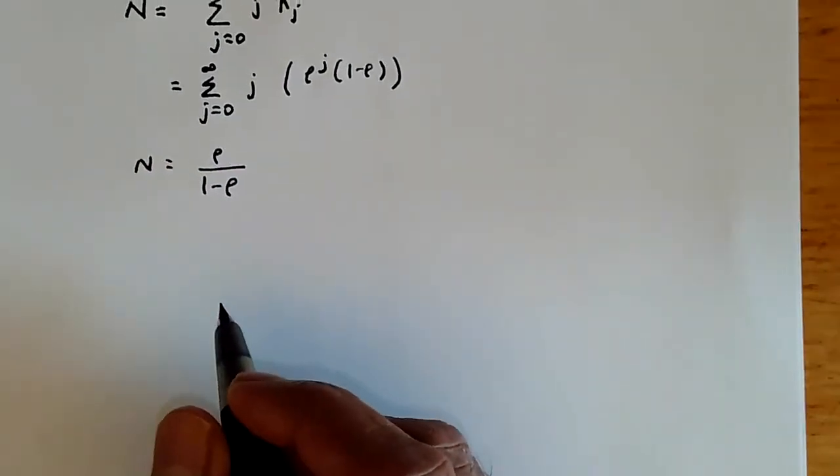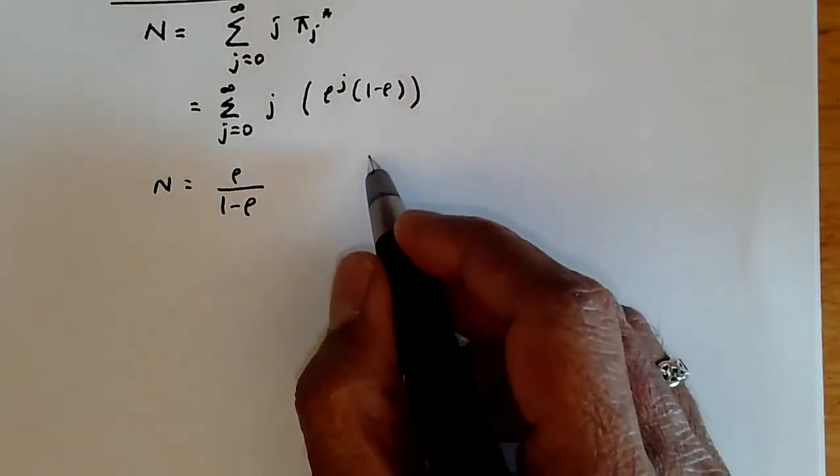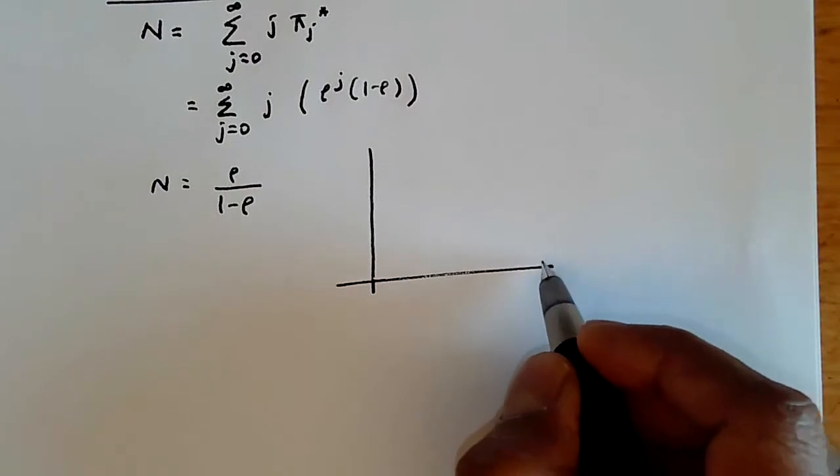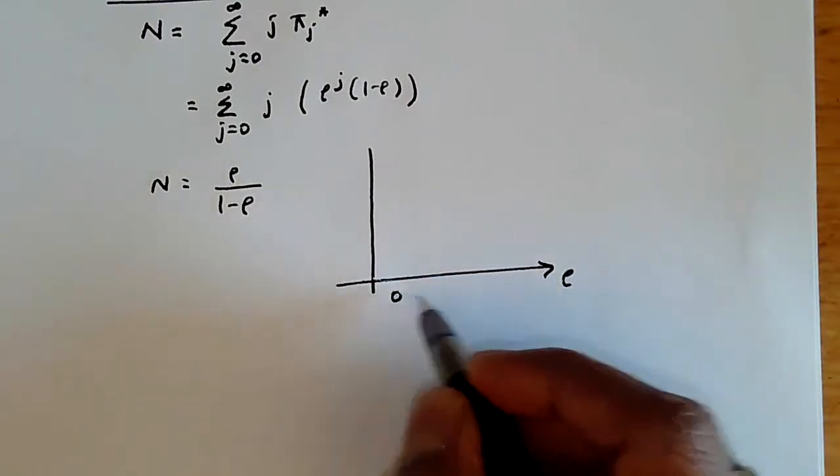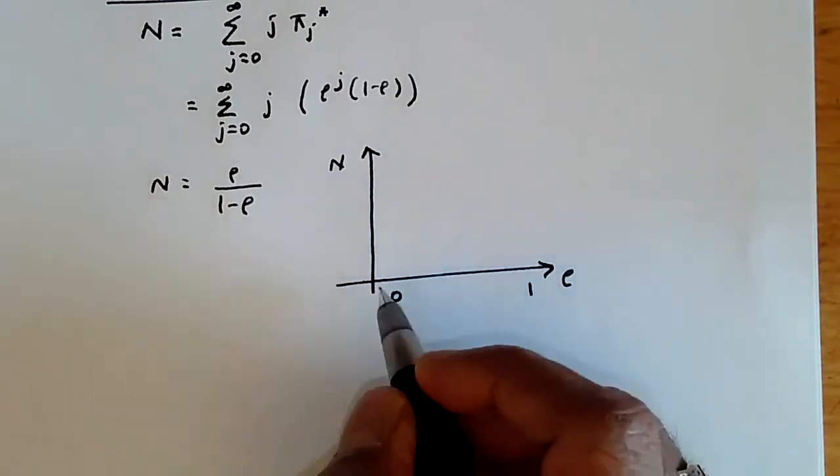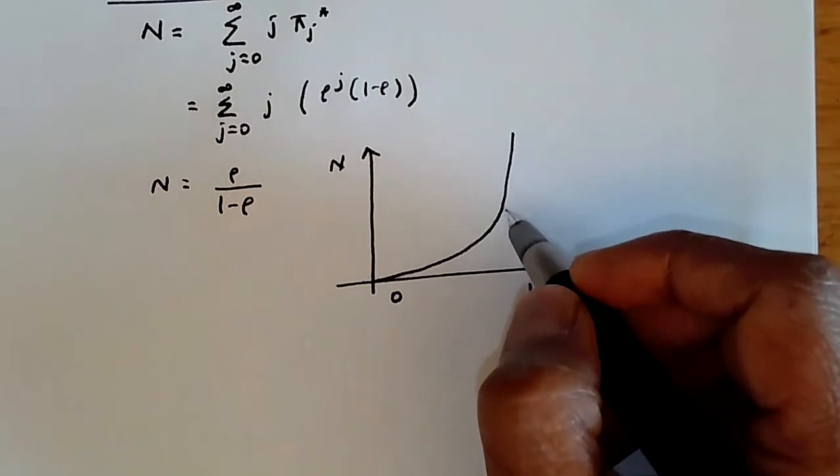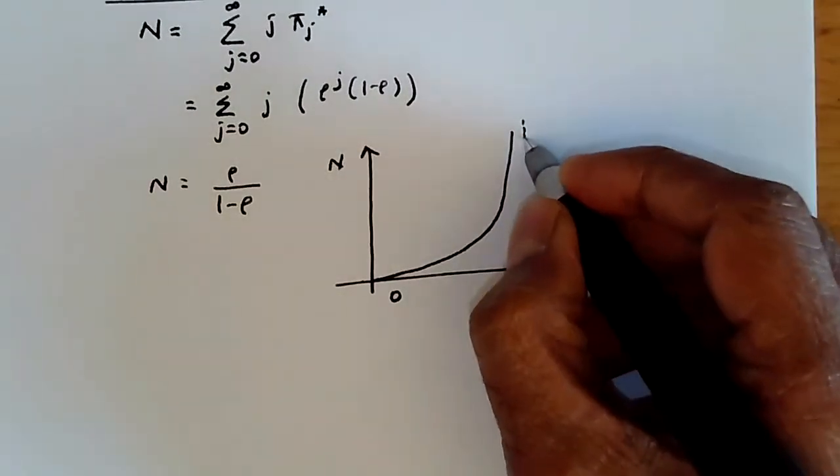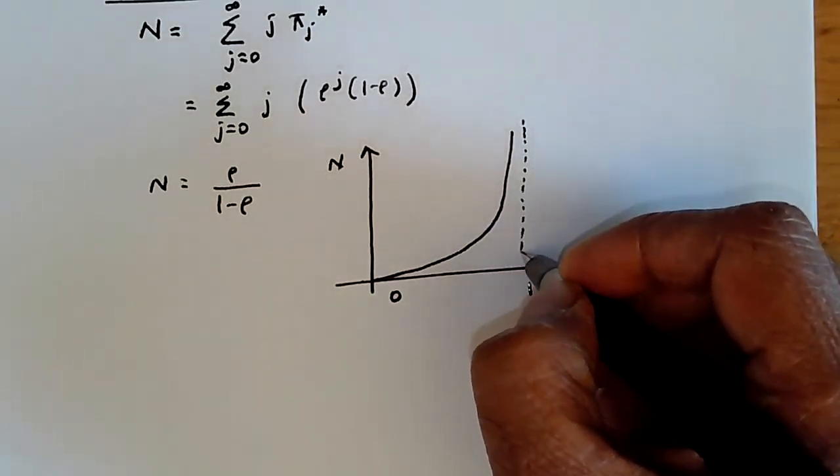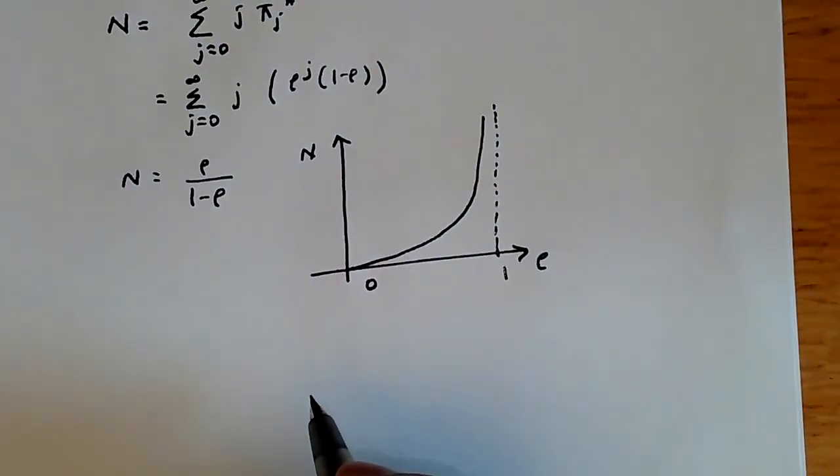As rho tends to 1, this value tends to infinity. In fact, if you draw rho going from 0 to 1, and over here we draw N, what we find is that it starts over here and it goes up. As the value goes to 1, it goes to infinity very quickly. It asymptotes to infinity at the value 1 over here. This is a very important behavior.